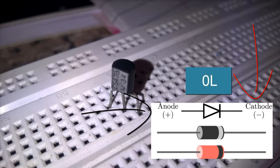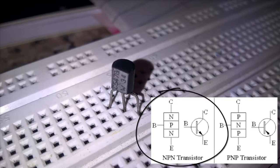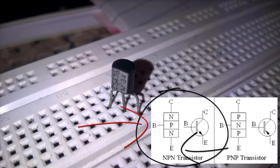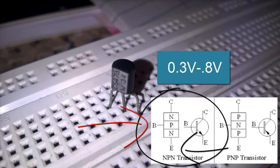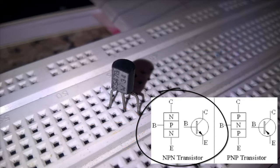The same technique can be applied to a transistor, as it is essentially two diodes stuck together. In the case of an NPN transistor, if I connect the positive testing probe to the base — the P-type terminal — and the negative testing probe to the N-type terminal, I should get a finite voltage between 0.3 volts and 0.8 volts. If the connections are made in the opposite fashion, I would get an OL reading.